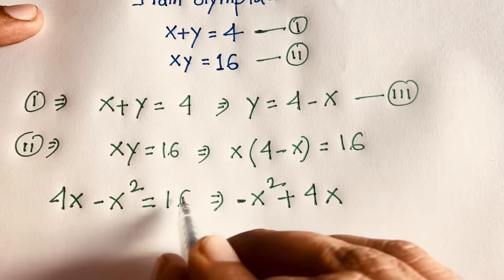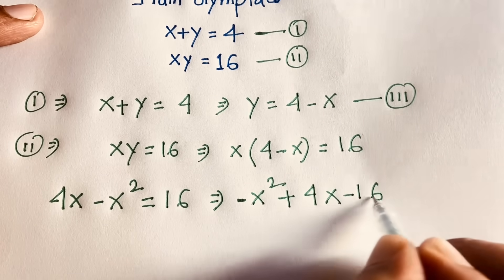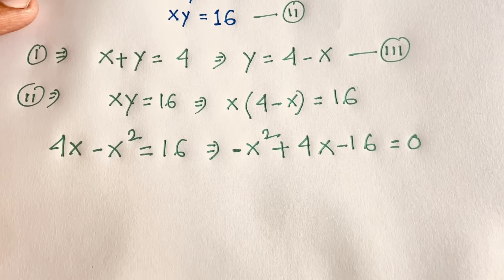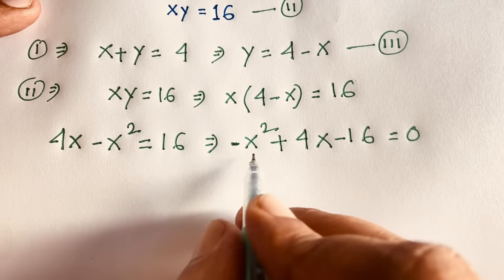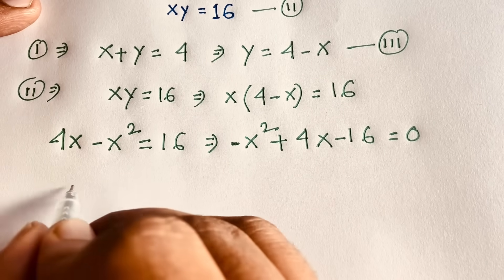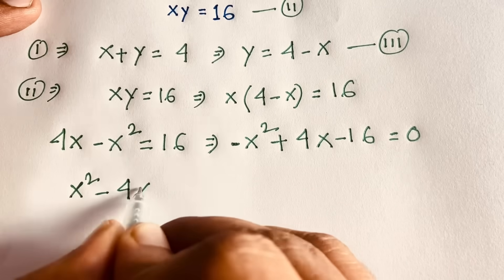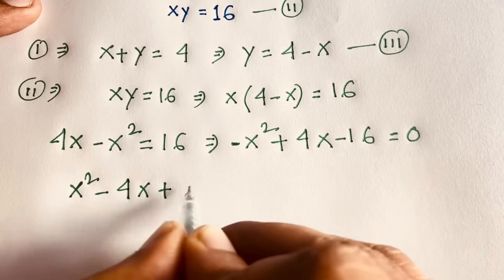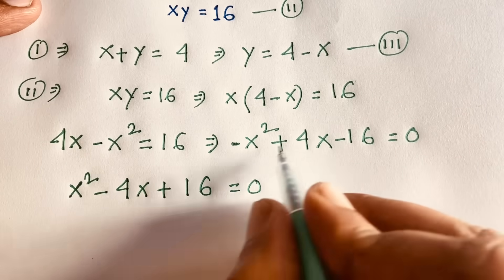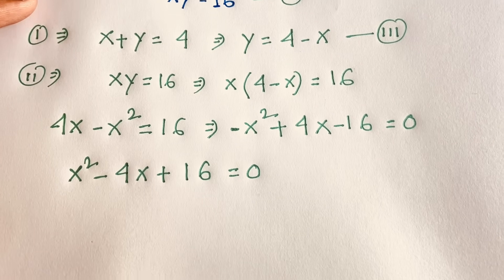Rearranging, we have negative x squared plus 4x minus 16 equals zero. Factoring out negative one gives x squared minus 4x plus 16 equals zero. This is our quadratic equation.